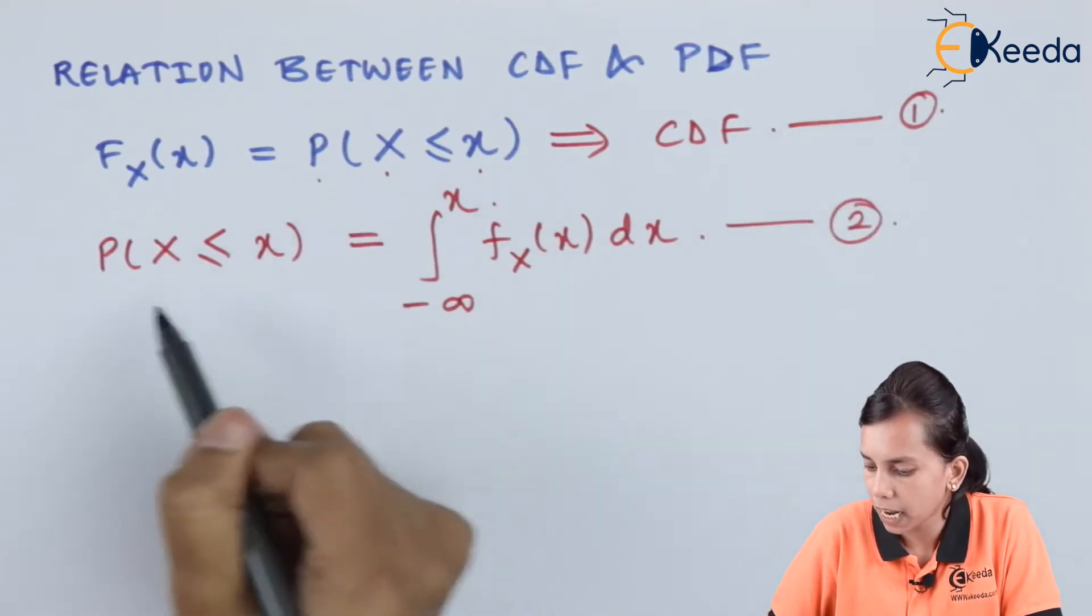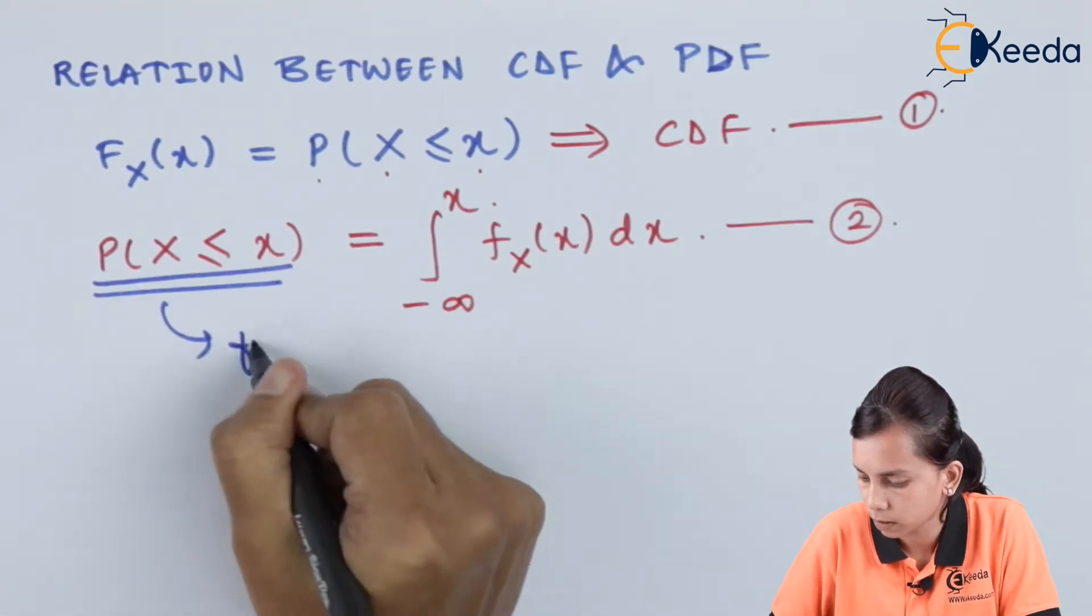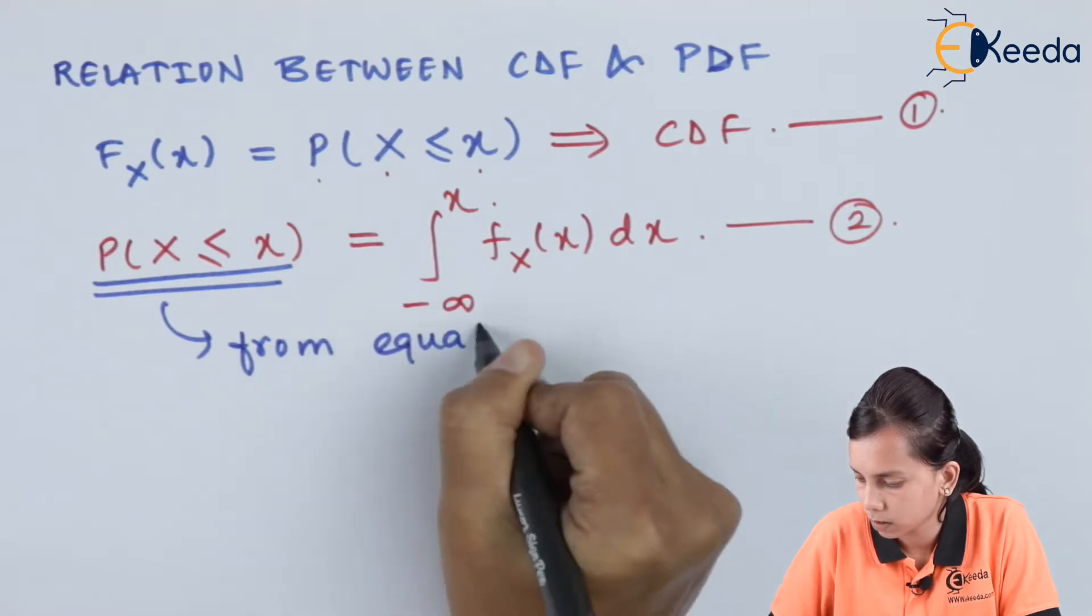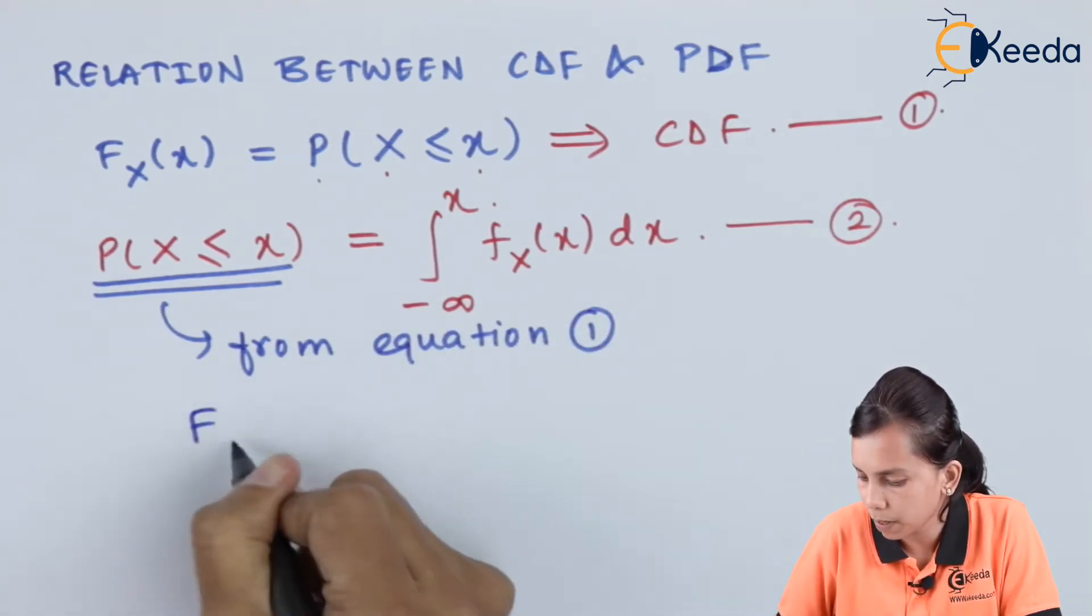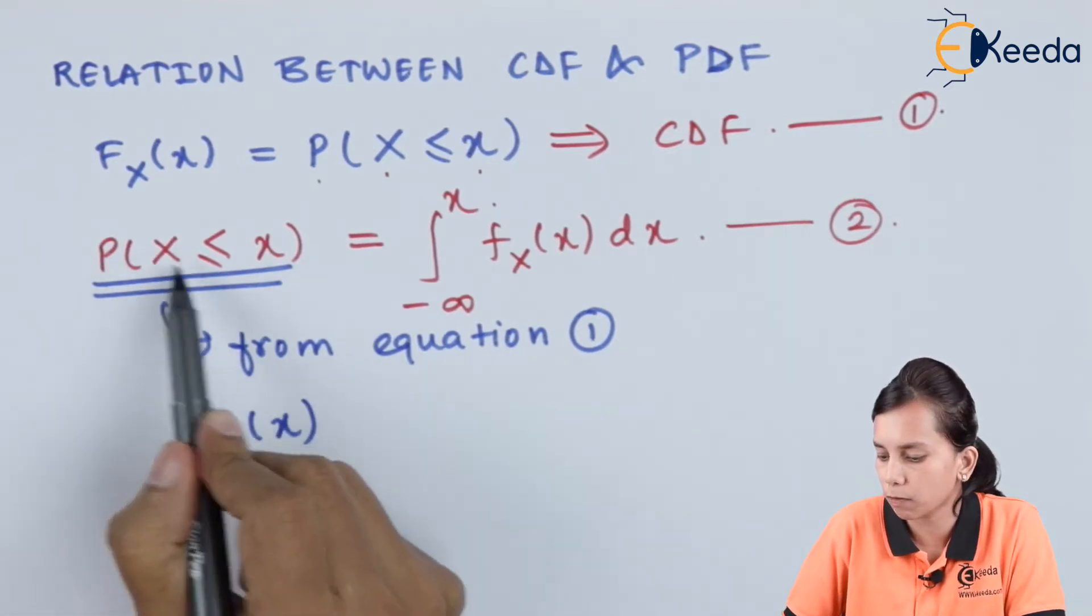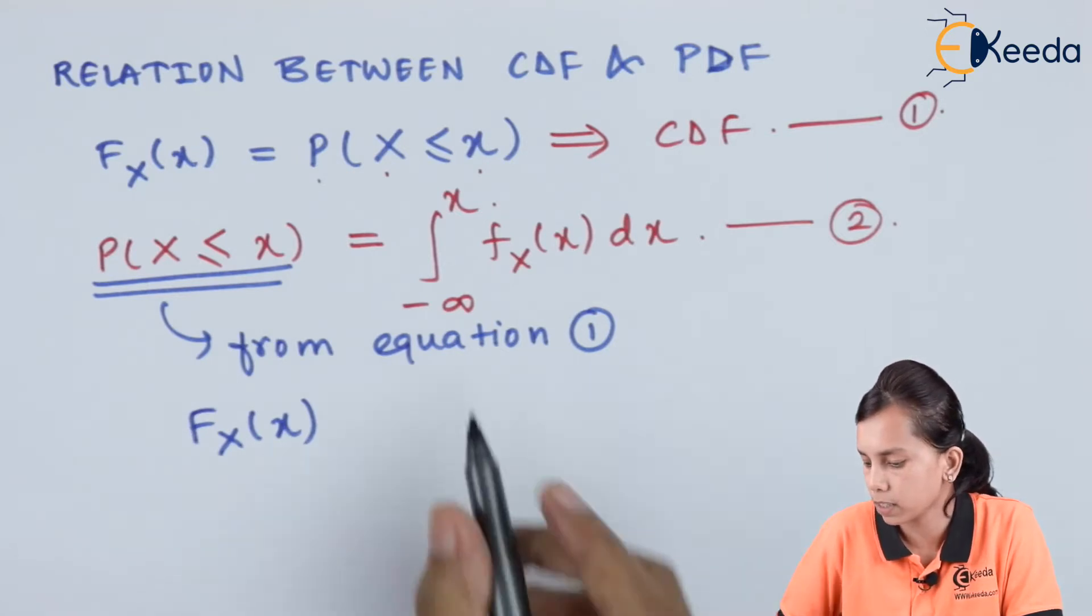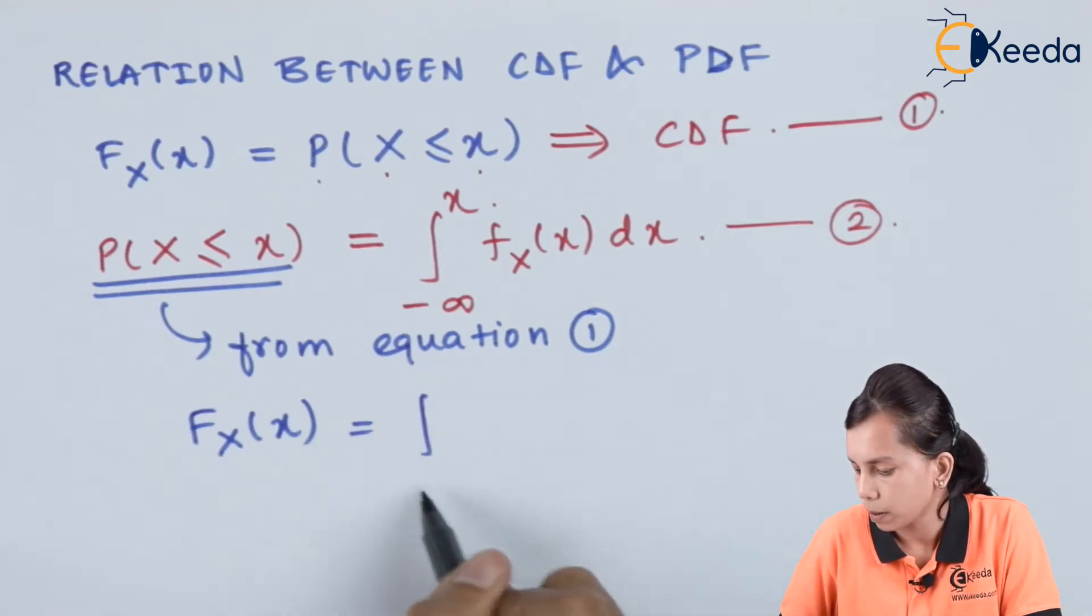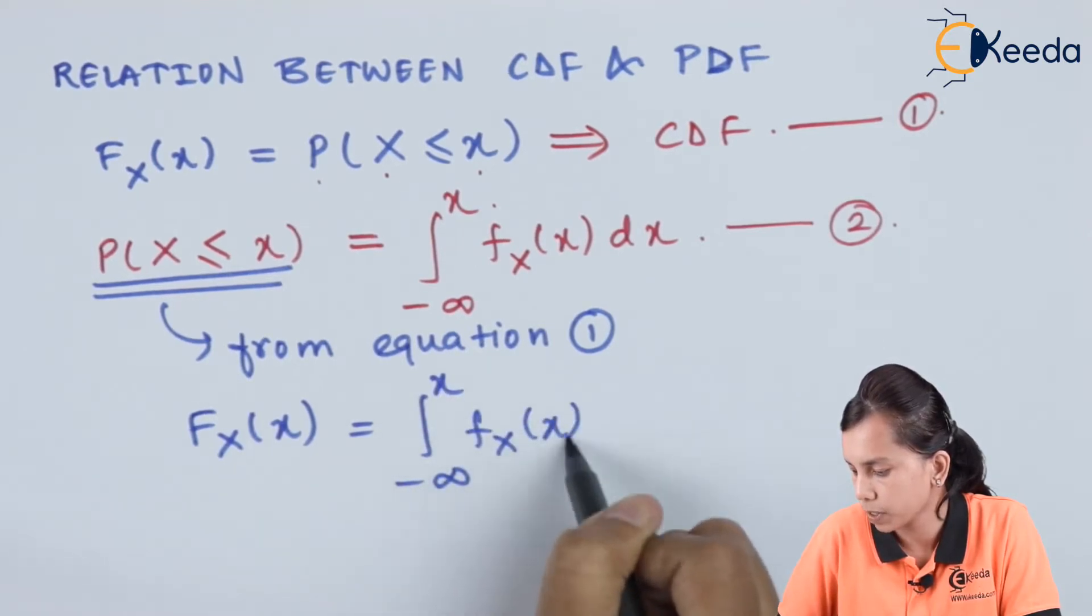So, from equation 1, I can say that this is nothing but F_X(x). This probability of X less than or equals to x is nothing but F_X(x) which equals the integral from minus infinity to x, f_x(x) dx.